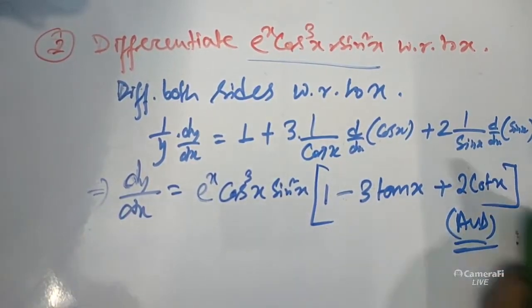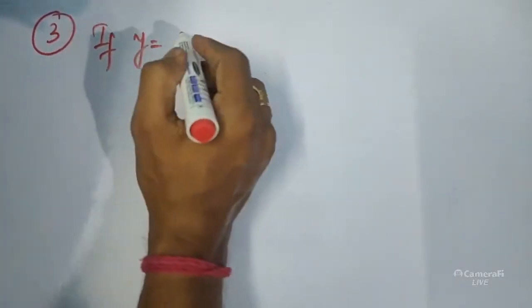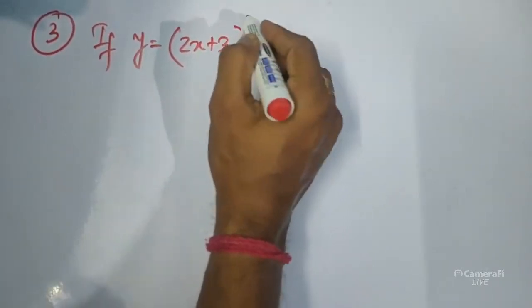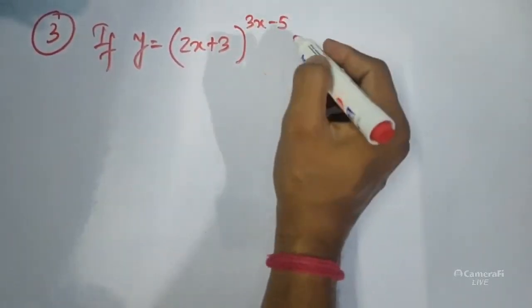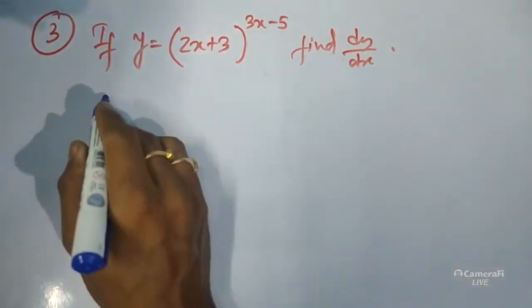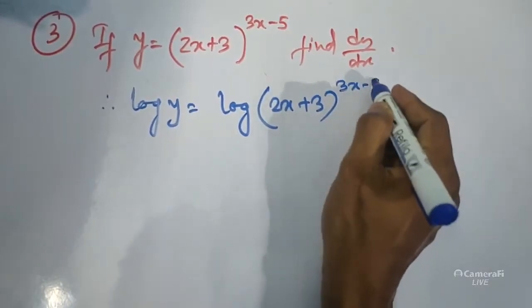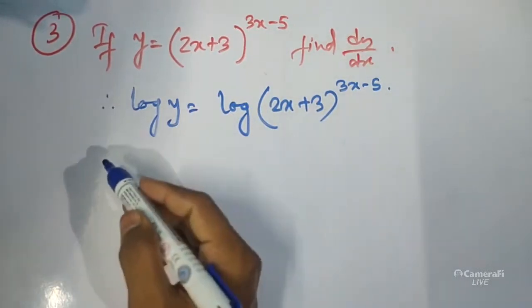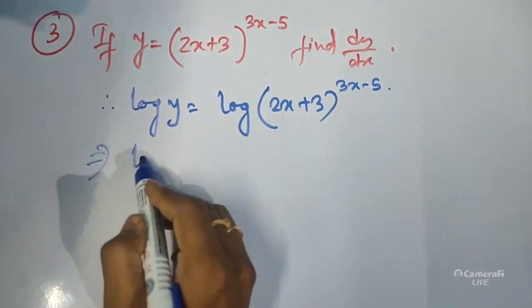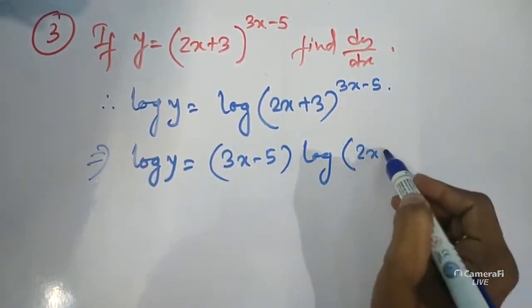Next problem, question number 3: if y equals (2x plus 3) to the power (3x minus 5), find dy/dx. Here, the power of a function is also a function, so in this case we also have to take log both sides. So log y equals log of (2x plus 3) to the power (3x minus 5). Applying the property log(xⁿ) equals n·log x, we get: log y equals (3x minus 5)·log(2x plus 3).